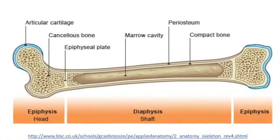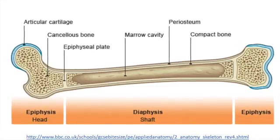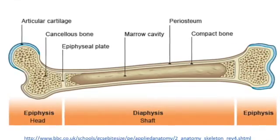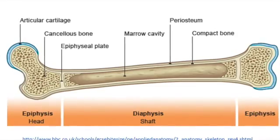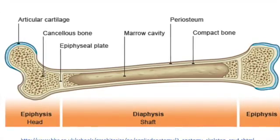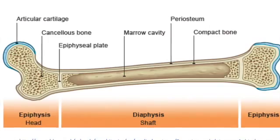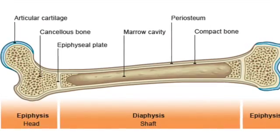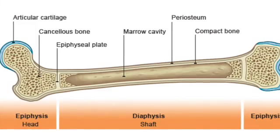Both heads are called epiphyses and the shaft in the middle is the diaphysis. Epiphyseal plates are present only in children that haven't grown to full size yet. When a child has grown to adulthood and reached full size, the epiphyseal plates will disappear and leave what's called an epiphyseal line.